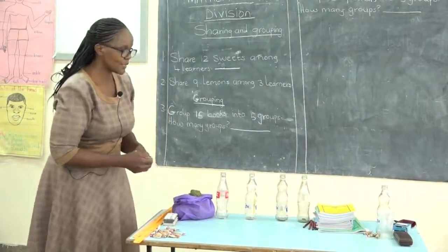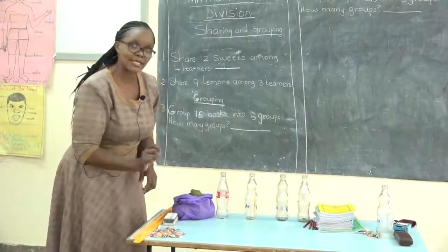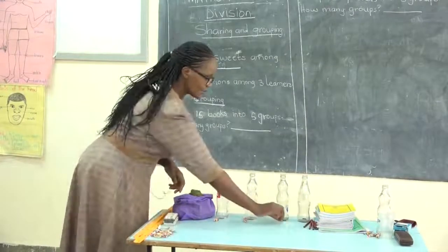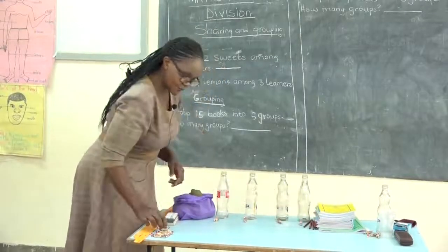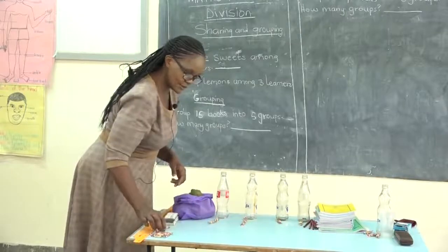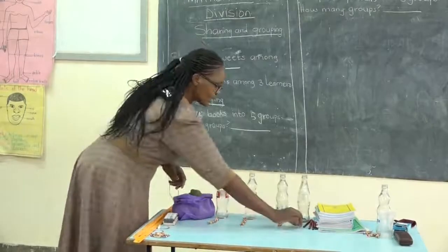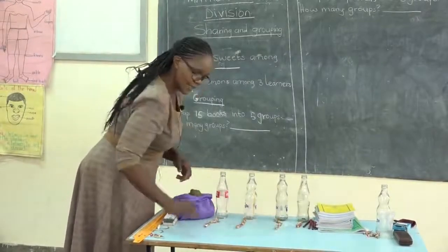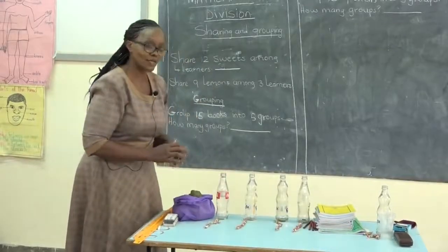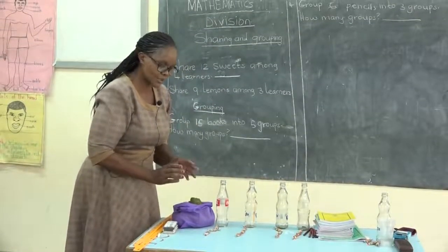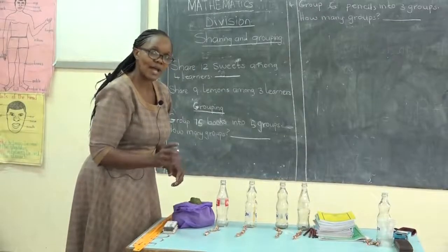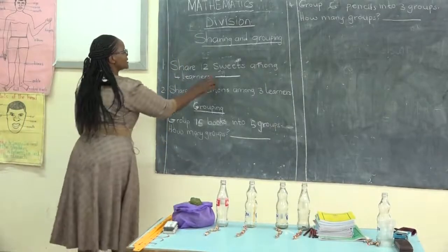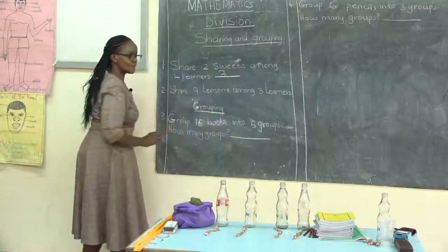We are going to share the 12 sweets among the four learners. Let us start sharing: one, two, three, four, five, six, seven, eight, nine, ten, eleven, twelve. We have shared all the sweets. Now let us count — each learner will get how many sweets? One, two, three. So each learner is going to get three sweets.